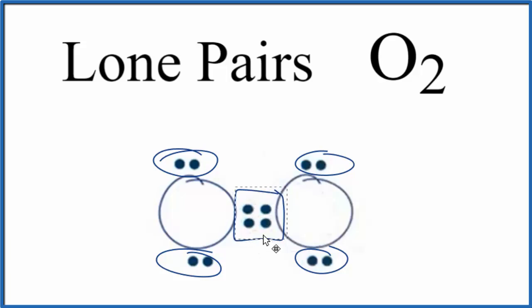So we have our bonding pairs of electrons right here, and then these are the lone pairs. We have one, two, three, four lone pairs for O2, the O2 Lewis structure.